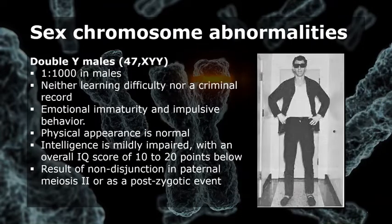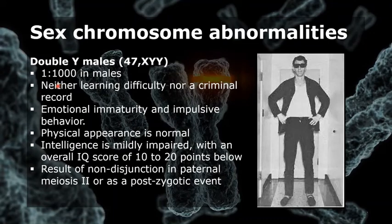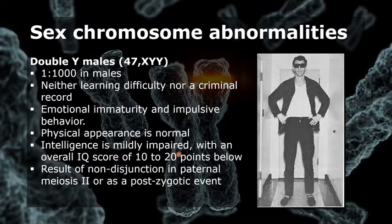Next we have XYY, or double Y males. This condition shows an incidence of about one in one thousand males at newborn. It is important to stress that most of these men have no learning difficulty nor a criminal record. However, they can show emotional immaturity and impulsive behavior. Fertility is normal, physical appearance is normal, and stature is above average. Intelligence is mildly impaired with an overall IQ score 10 to 20 points below average. The additional Y chromosome arises either from non-disjunction in paternal meiosis 2 or as a post-zygotic event.